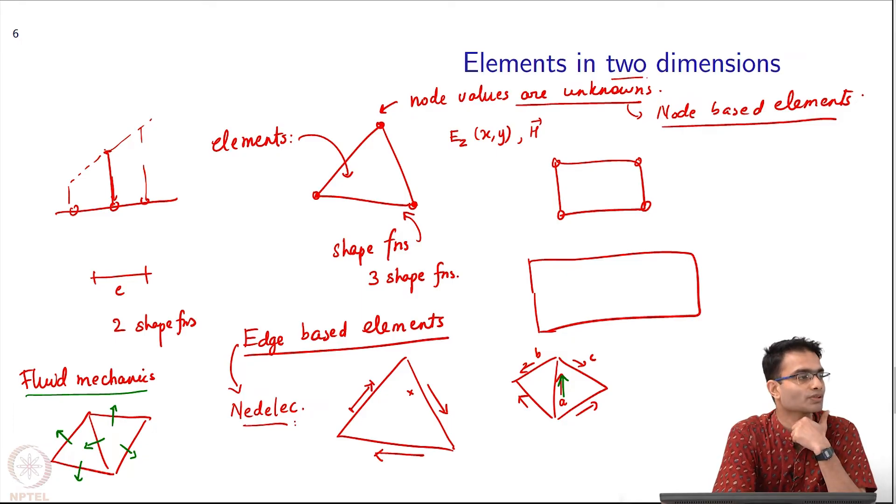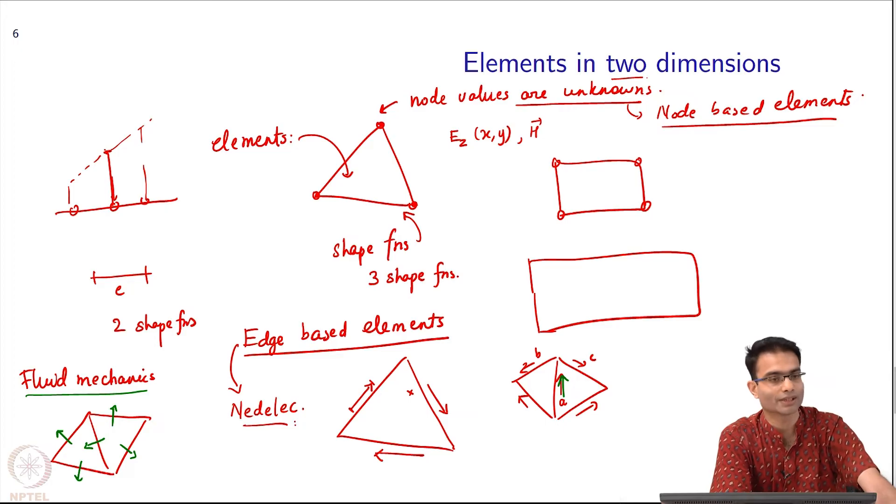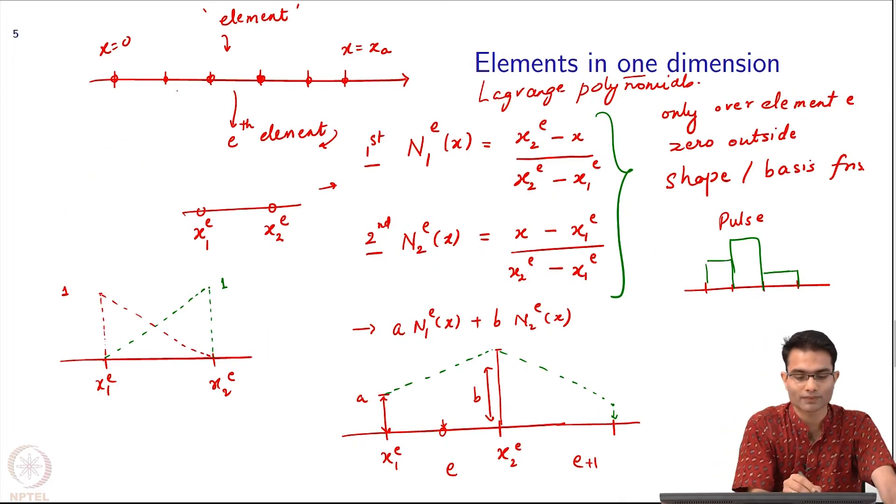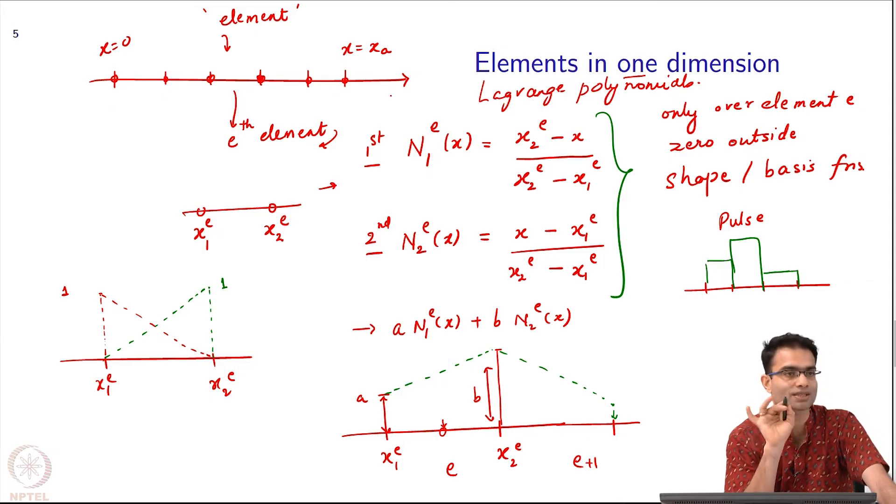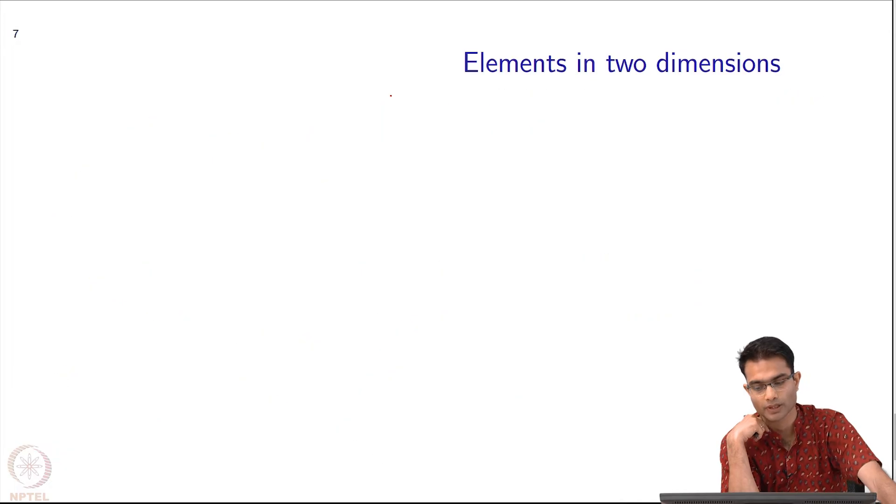If there are N elements in the domain, how many unknowns are there? There will not be 3N unknowns because many of the nodes are shared. Similarly in the case of 1D, there were 6 nodes. Unknowns are 6, elements are 5. 5 elements have 5 into 2, you would think 10 nodes per element, but of those, 4 are shared. So 10 minus 4 gives me 6, which is what my... Similar accounting happens in the case of 2 dimensions.